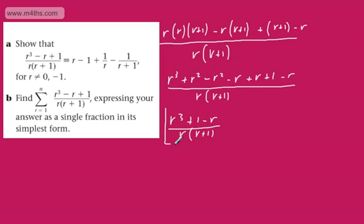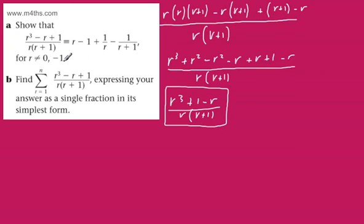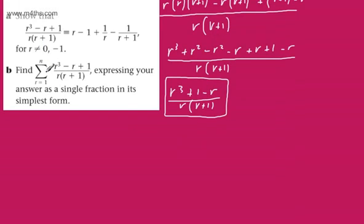We can see the r cubed will remain. The r squareds are cancelling, and the r and minus r cancel, leaving us with r cubed plus 1 minus r over r(r+1). So you're just combining the fractions — don't try partial fractions or polynomial long division. Just go at it like so. Note r can't be equal to 0 and r can't be equal to negative 1.